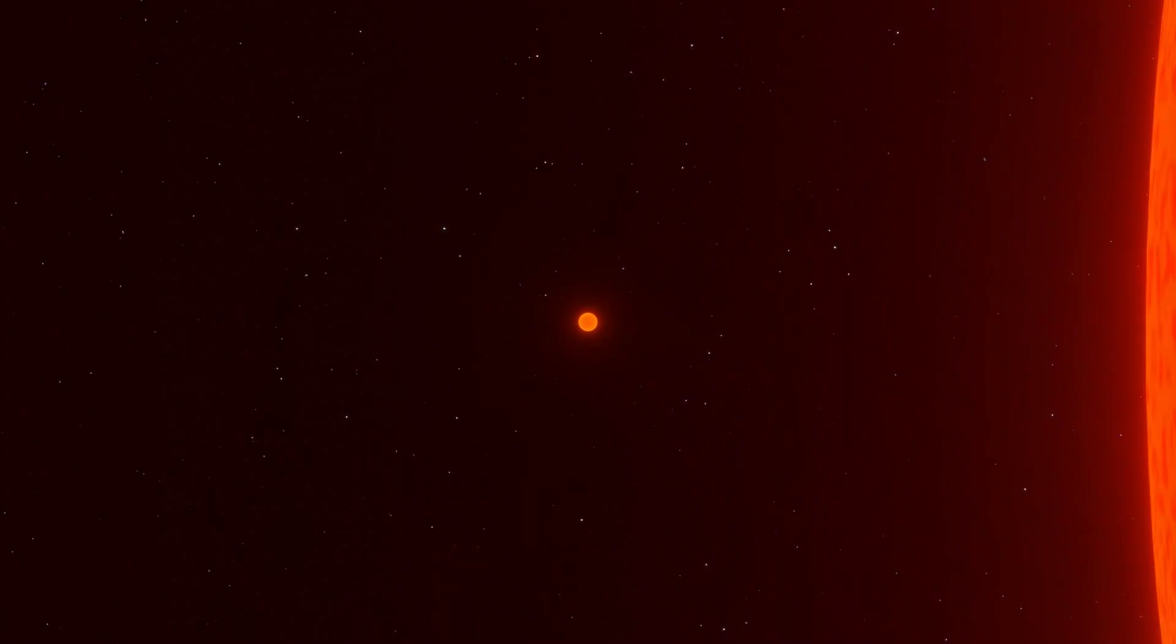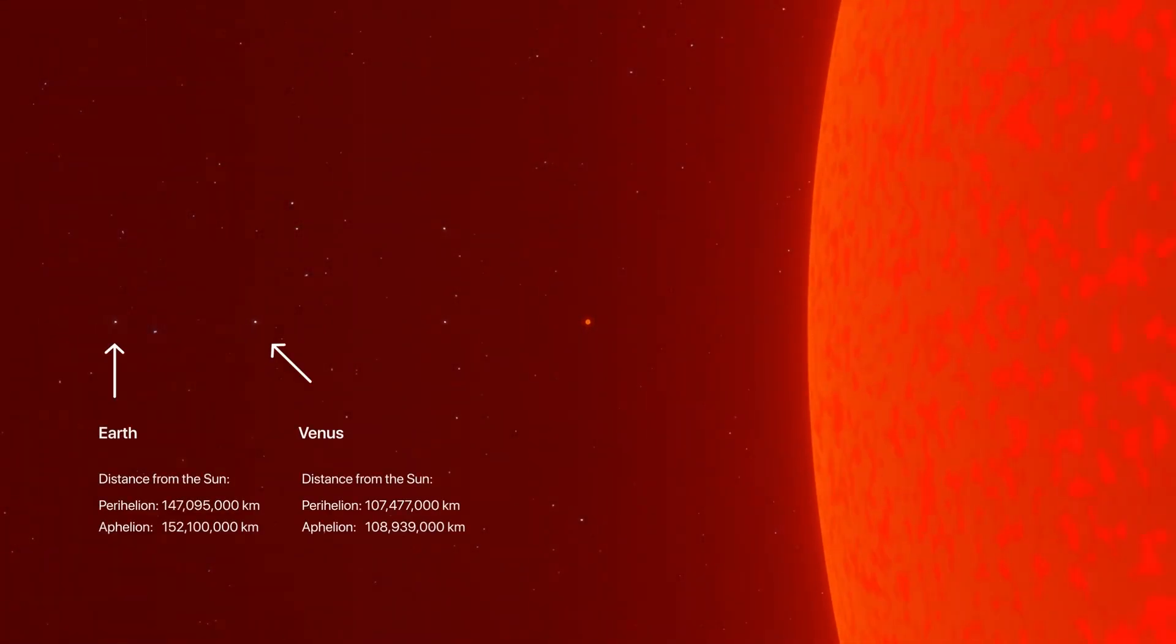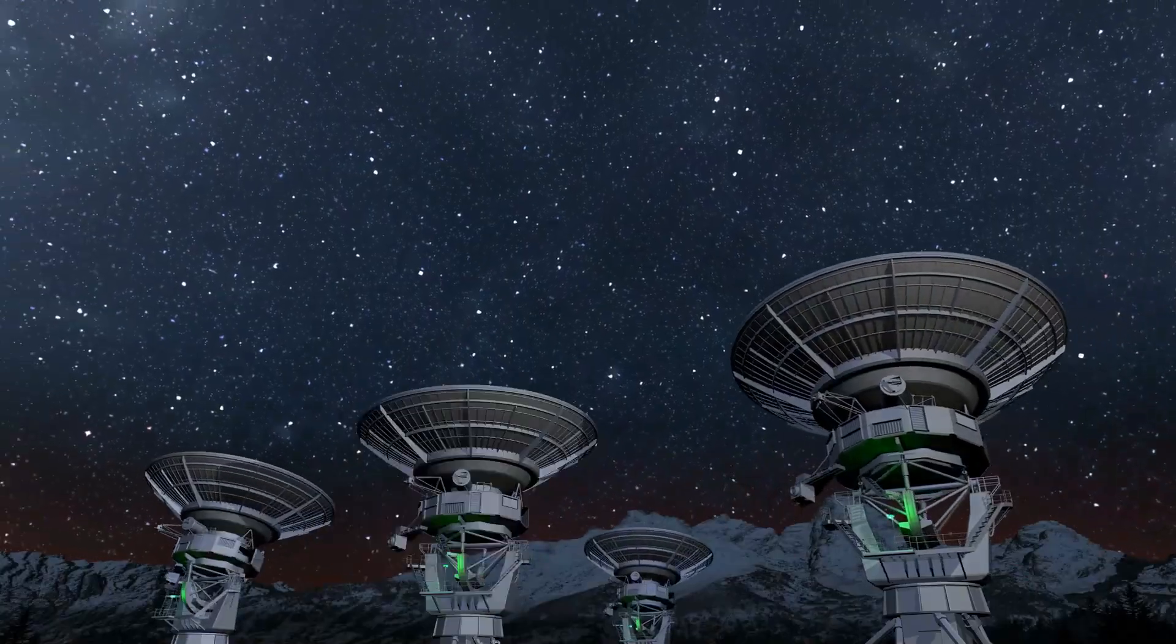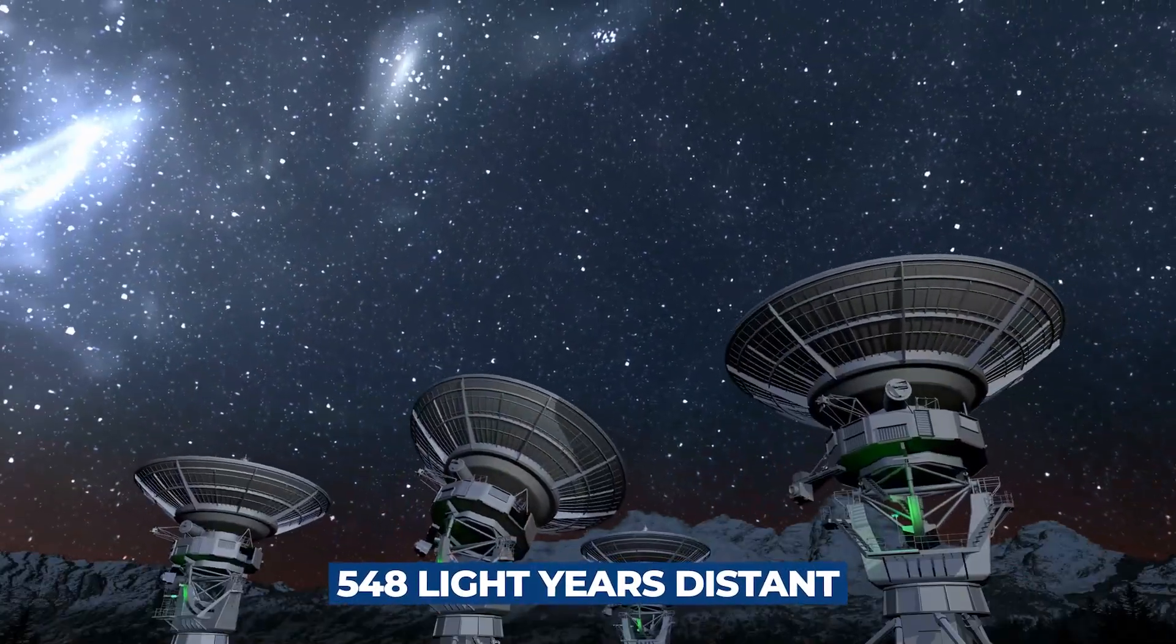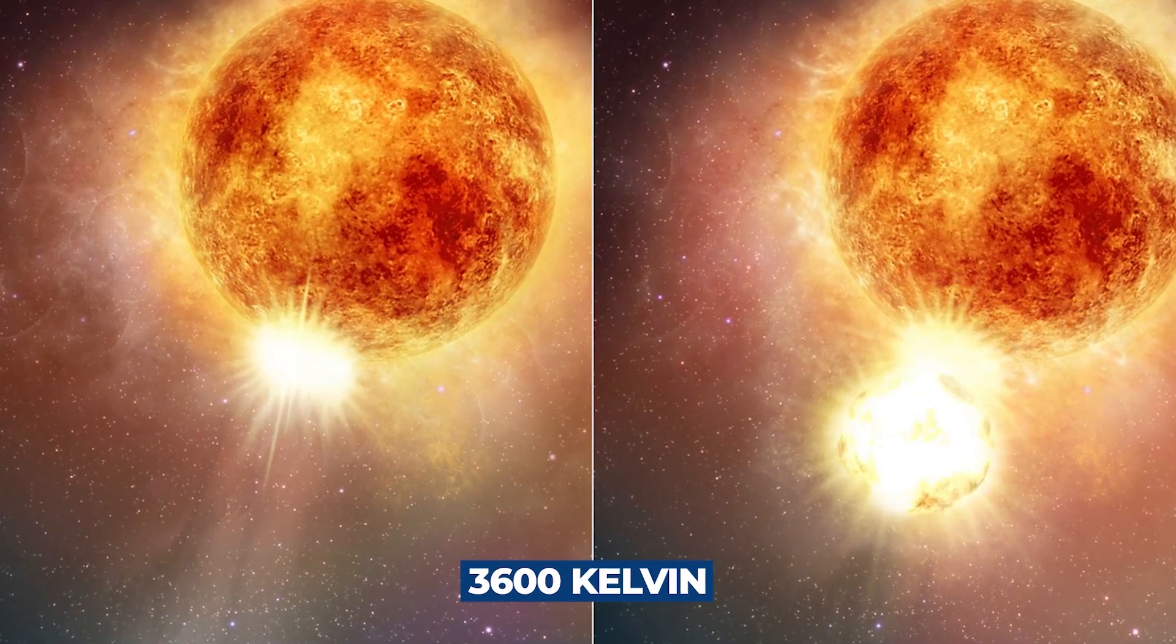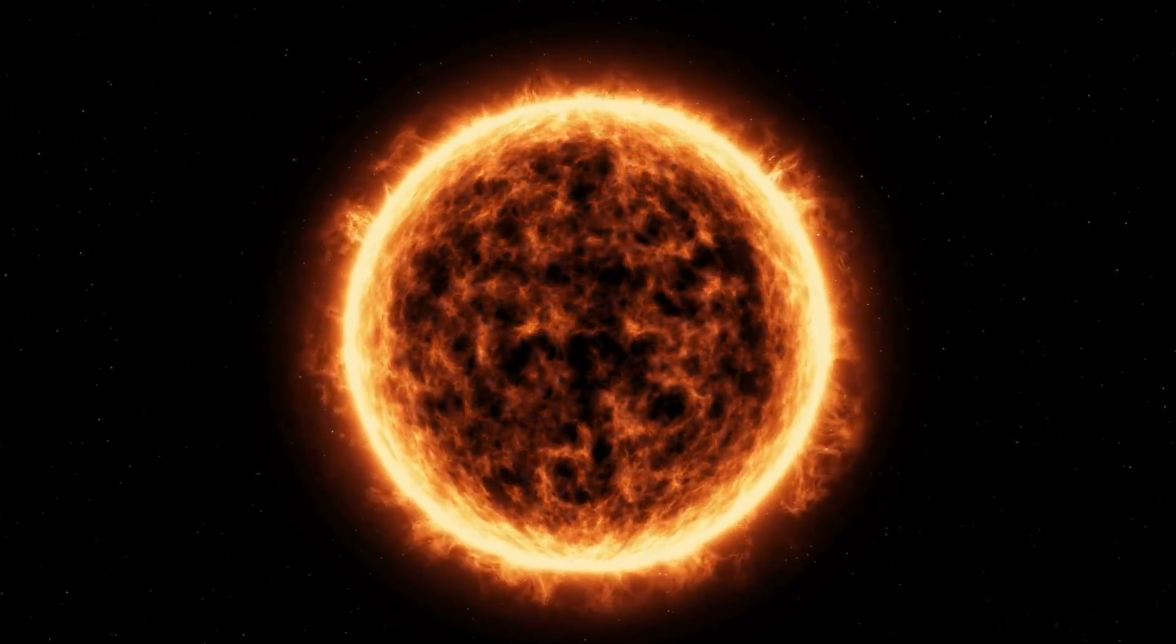It is 1.5 times the size of our Sun, has 126,000 solar luminosities, and can be observed from 548 light-years away. Its surface temperature is 3,600 Kelvin, which makes it colder than our Sun.